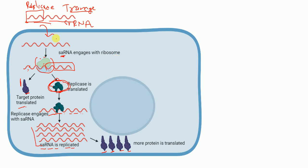In self-replicating or self-amplifying RNA, they have sequences for replication machinery and for our gene of interest. They enter the cell, engage with the ribosome, and from that our target protein is translated and replication machinery is translated. The replicase machinery then engages with the self-amplifying RNA, replicating it, producing more self-amplifying RNA, and ultimately more target protein.